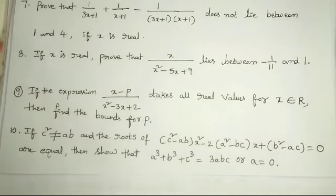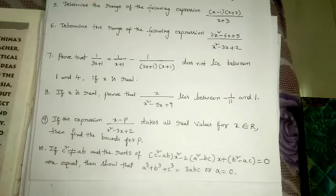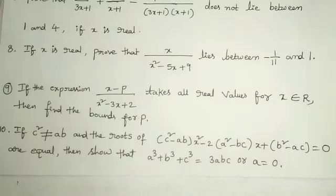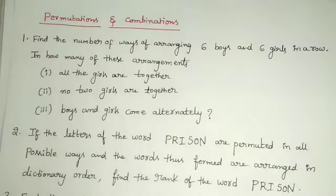Questions 1 to 9 are of the same model, and this is the last model. You can easily attempt the 4-mark questions from the topic quadratic expressions because all the questions are of the same model. We can expect two questions from this topic in the half-yearly examination. The next topic is permutations and combinations.